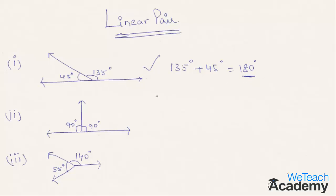Let us go with the third example. Here these angles are a linear pair since the sum of these angles is 90 plus 90, that equals 180 degrees.